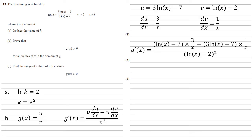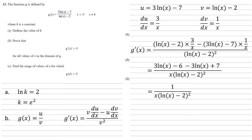Expanding the brackets on the top and bringing the 1/x terms together: we get (3 ln x − 6 − 3 ln x + 7) / [x(ln x − 2)²]. The 3 ln x and −3 ln x cancel, and −6 + 7 = 1, so g'(x) = 1 / [x(ln x − 2)²].